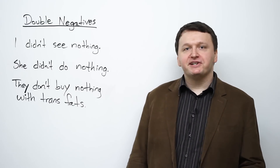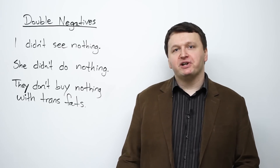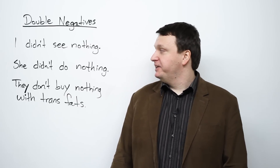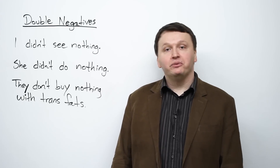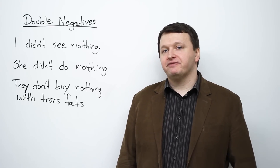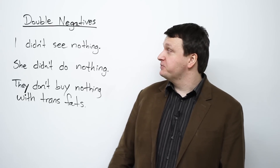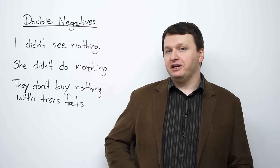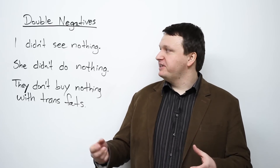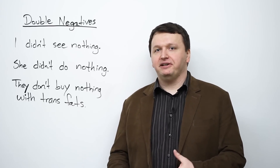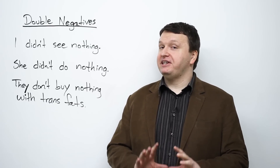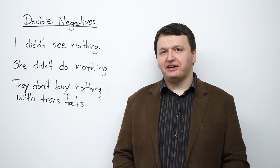Double negatives. So what's a double negative? There are three examples on the board: 'I didn't see nothing', 'She didn't do nothing', 'They don't buy nothing with trans fats.' Now you see two negative words in each of these three sentences. In the first one, 'didn't' is obviously a negative word, and 'nothing' is also a negative word. So if you say 'I didn't see nothing', you actually mean that you saw something — you're giving the opposite meaning of what you actually want to say.